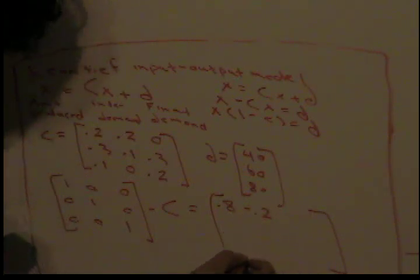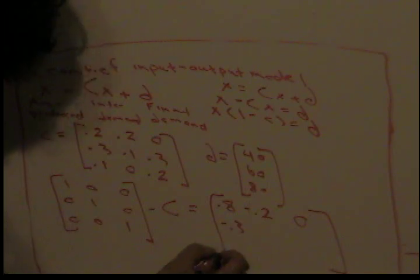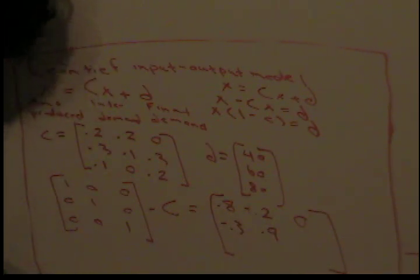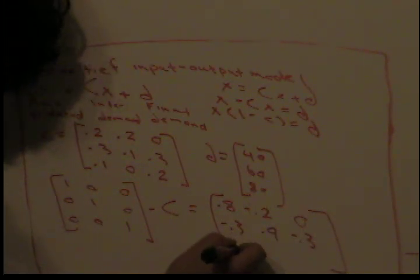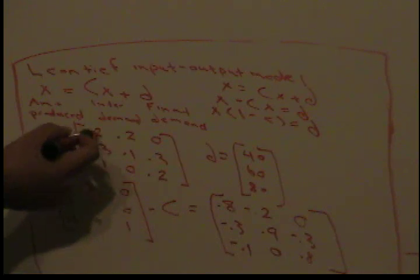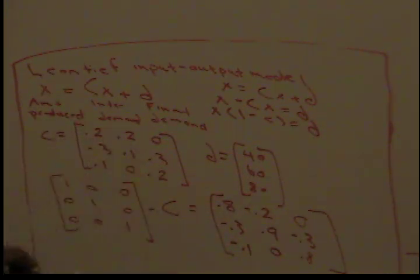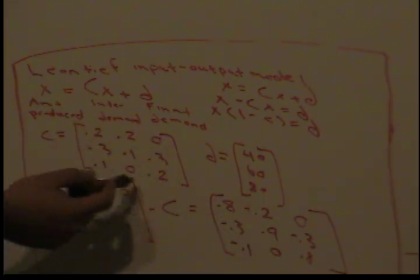When we compute I minus C, only the diagonal entries are affected. We get 1 minus 0.2 equals 0.8, 1 minus 0.1 equals 0.9, and 1 minus 0.2 equals 0.8. Everything else stays the same because the off-diagonal entries of the identity matrix are zero.